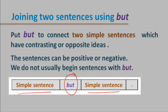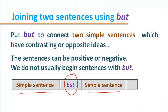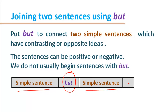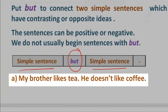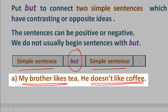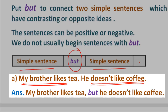Example A: My brother likes tea. He doesn't like coffee. Both sentences are simple — the first is positive and the second is negative, and the ideas are contrasting. So the sentences are joined like this: 'My brother likes tea, but he doesn't like coffee.' We should put a comma before 'but'.